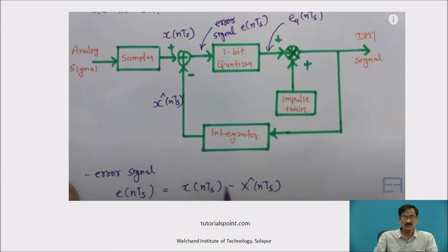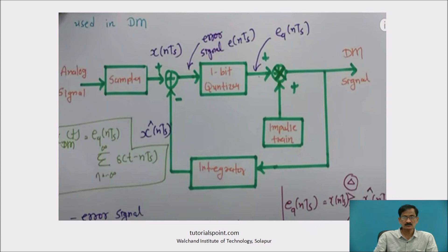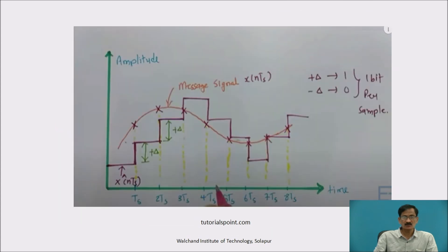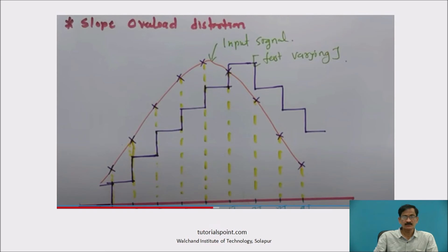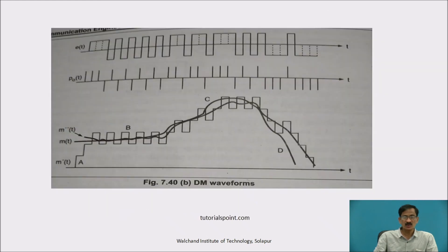This shows the staircase predicted output following the continuous analog signal shown in orange. This is the sampled input and accumulator at the transmitter and receiver side. This is the slope overload distortion, in which the orange color shows the analog input whereas the blue staircase is the quantizer output, which is not following the analog signal exactly. This is the combination of granular noise and slope overload distortion.